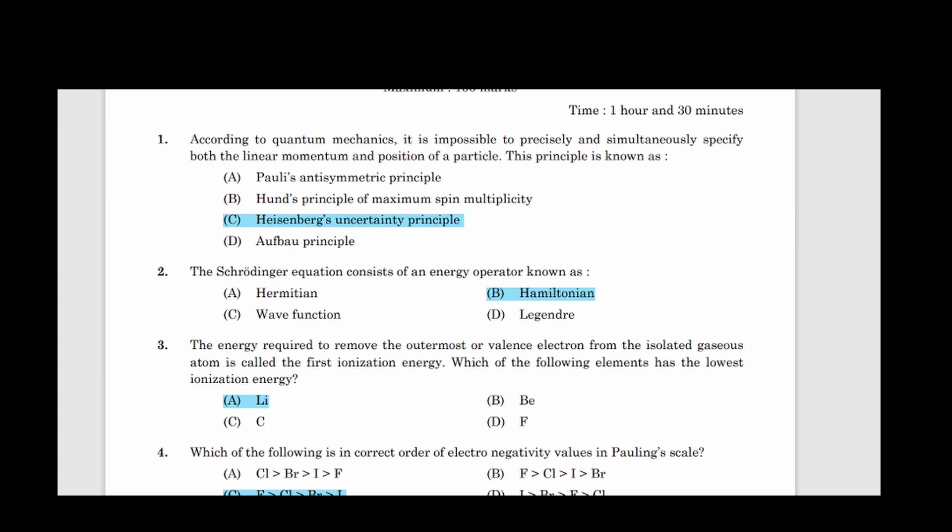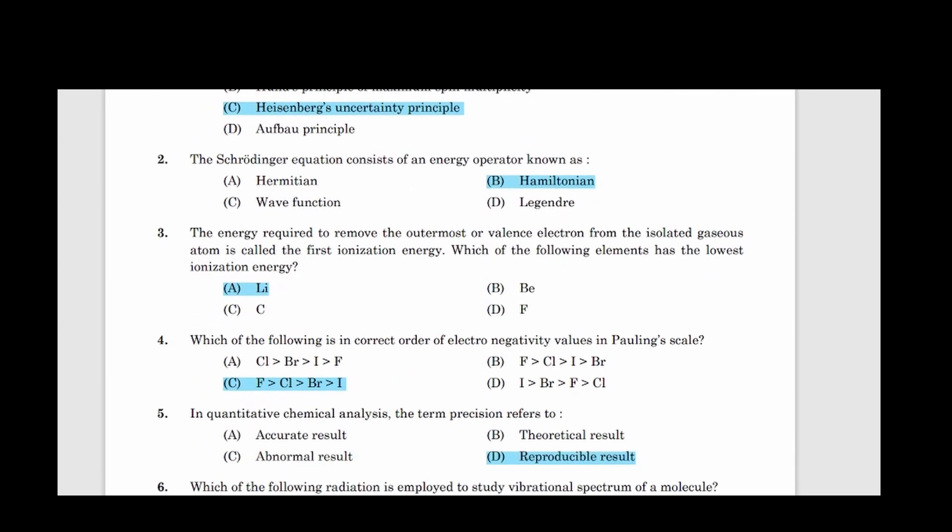Third question: The energy required to remove the outermost or valence electron from the isolated gaseous atom is called the first ionization energy. Which of the following elements has the lowest ionization energy? Correct answer option A, Lithium. Fourth question: Which of the following is in correct order of electronegativity values in Pauling scale. Correct answer option C: F greater than chlorine, chlorine is greater than bromine and bromine is greater than iodine.